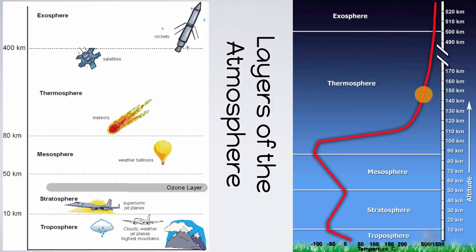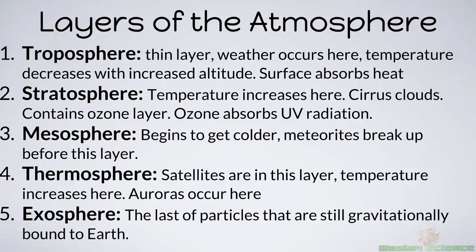Quick review of the layers: In the troposphere, it's a thin layer — only 10 kilometers — where the weather occurs and temperature decreases with increased altitude. In the stratosphere, the temperature begins to increase; you have some high clouds and the ozone layer absorbing UV radiation. In the mesosphere, it gets colder and meteorites break up. In the thermosphere, satellites are found and temperatures increase. In the exosphere — the last layer — particles are still gravitationally bound to the Earth.